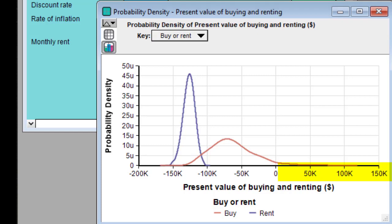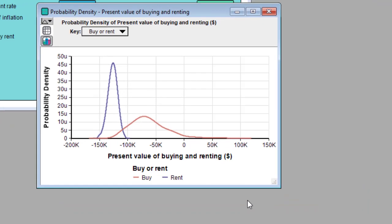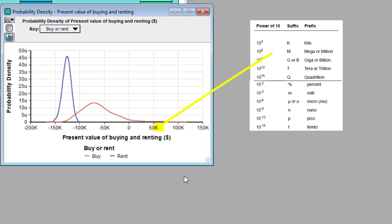The positive values show where I might actually make a profit, which might happen if property values increase after I buy the house. The k after each number in the x-axis stands for thousand. Numerical suffixes like k and mu are used extensively in Analytica because they turn out to be extremely nice when looking at very large or very small numbers.